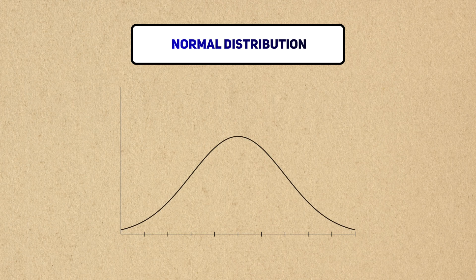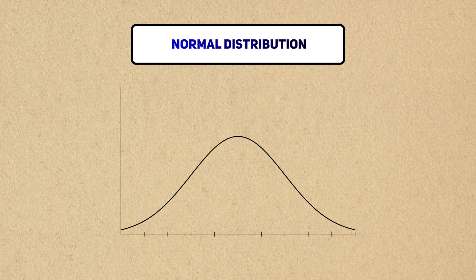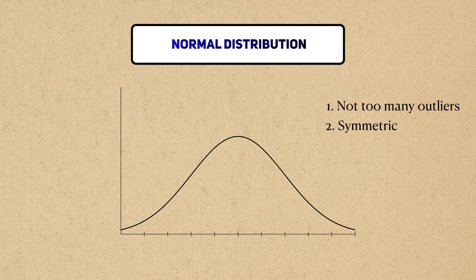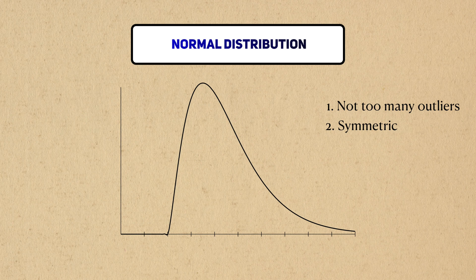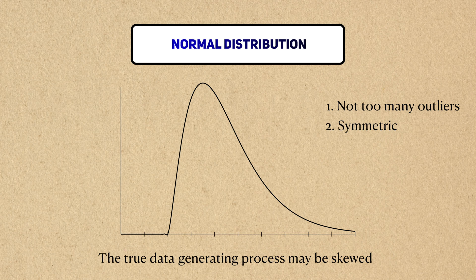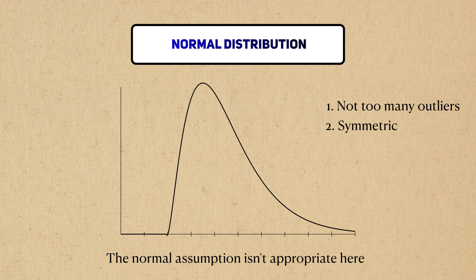If you assume data is normally distributed, it comes with a few stipulations. One is that there shouldn't be too many outliers in the sample. I've also mentioned that normally distributed random variables are supposed to be symmetric. If your data seems to have higher values that lean to one or the other side, your data generating process may be naturally skewed, so a normal assumption may be inappropriate.